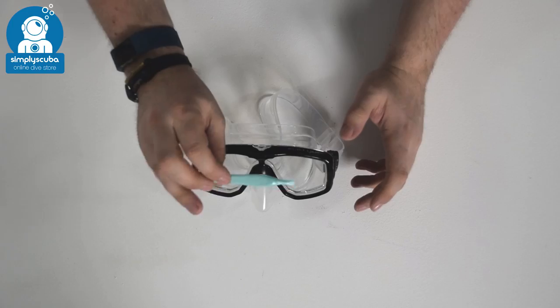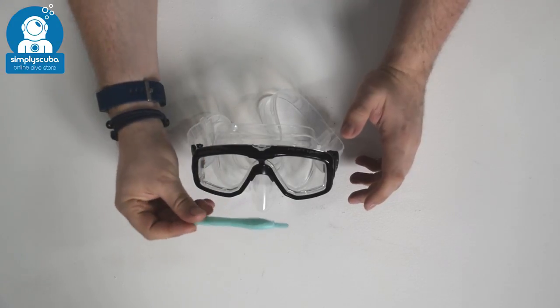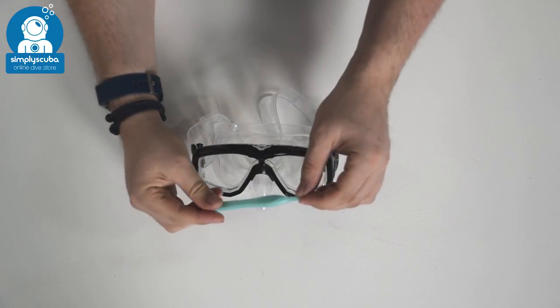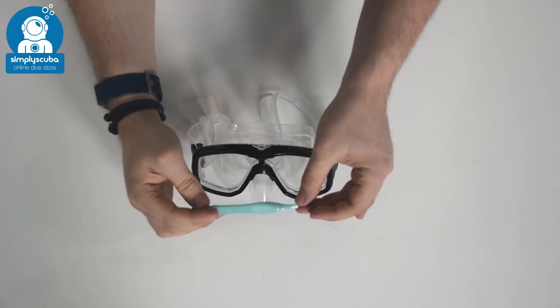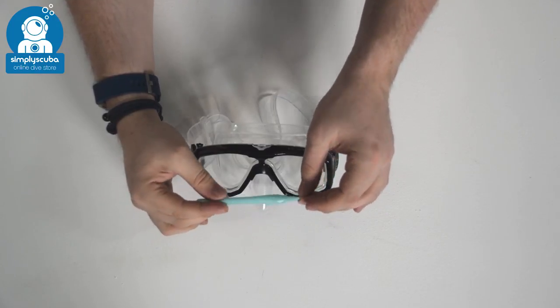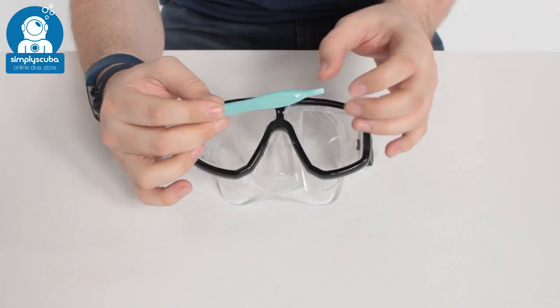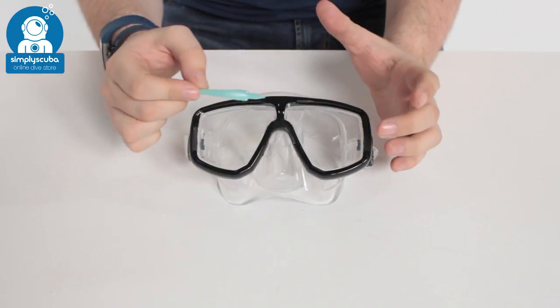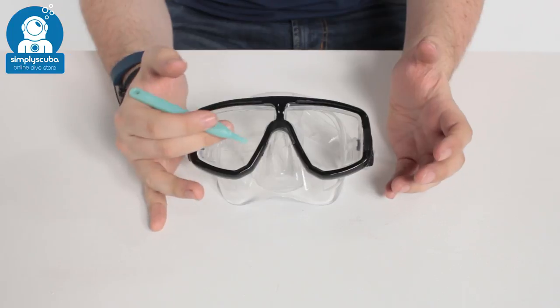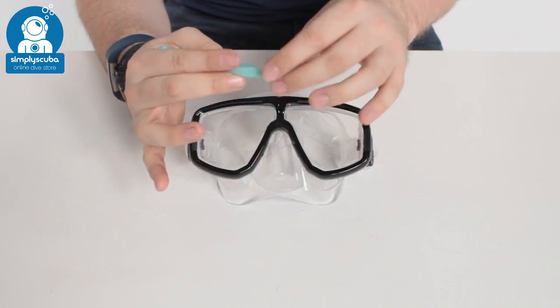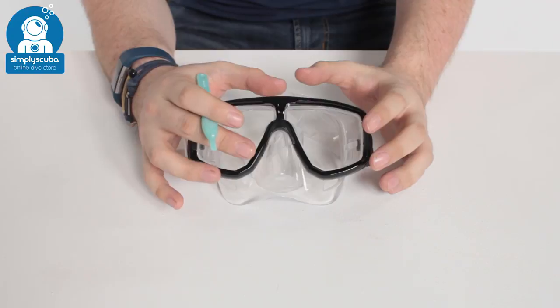Okay, so first off, a very handy tool is the TUSA mask lens tool. It's basically a plastic flathead screwdriver, but it's much safer because instead of using a metal flathead screwdriver, if you ever slip you're just going to scratch and damage your mask, whereas with this it's a softer plastic so you're not going to scratch or damage your mask.